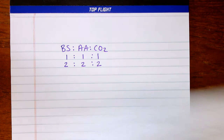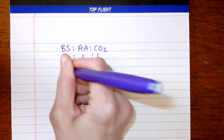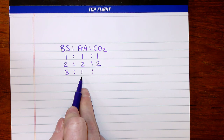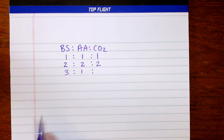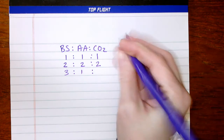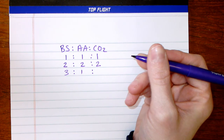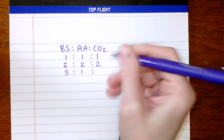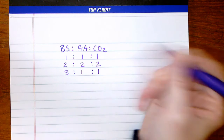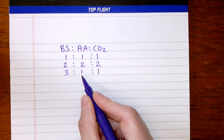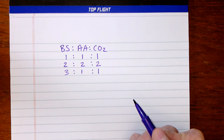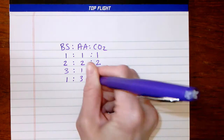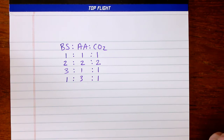If we have a three-to-one ratio, the maximum amount of carbon dioxide we can make is one mole — whatever molar value you have for the one. Our theoretical yield would just be one. This means acetic acid is our limiting reactant and baking soda is our excess reactant.